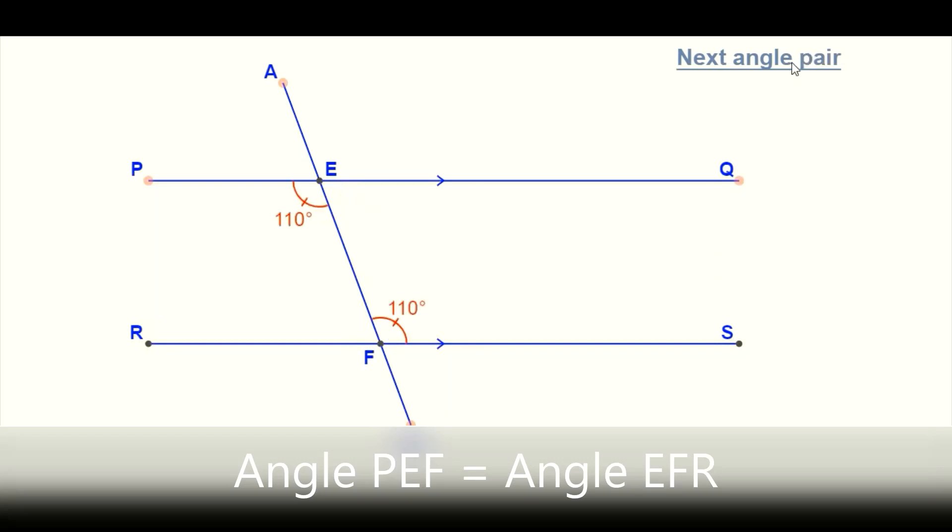And let me show you. So these two angles have the same measure, a measure of 110 degrees, and they are called alternate angles.